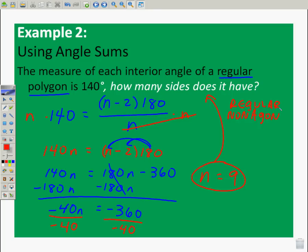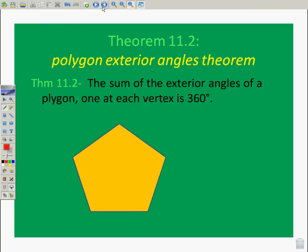Once again, feel free. Pause. Go back. Review that one. Theorem 11.2. Polygon exterior angle theorem. The sum of the exterior angles of a polygon, one at each vertex is 360. This is what that looks like.